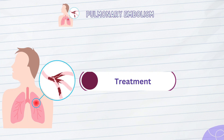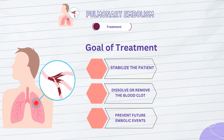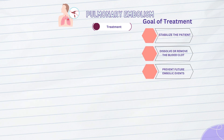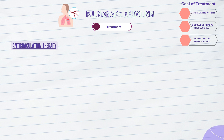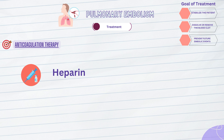When a patient is diagnosed with pulmonary embolism, immediate management is crucial to prevent further complications and reduce the risk of mortality. The primary goals of treatment are to stabilize the patient, dissolve or remove the blood clot, and prevent future embolic events. Anticoagulation therapy is the cornerstone of treatment. It involves the administration of medications that prevent the formation of new blood clots and aid in the breakdown of existing clots. Heparin is usually given intravenously or subcutaneously and acts quickly to prevent clot formation, and is often used initially in the acute setting.